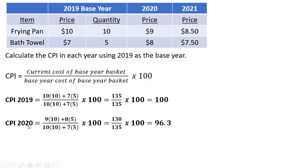The CPI in year 2020 is going to be the current cost of the base year basket. So the current prices here in 2020 — it's going to be 9 times 10 plus 8 times 5. And then the base year cost of the base year basket, we already calculated that; that doesn't change. So doing the math here, we have 130 over 135 times 100, and we get a CPI in 2020 of 96.3.